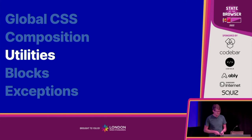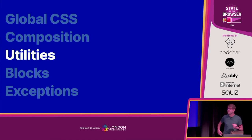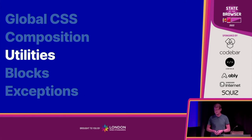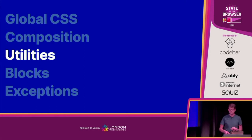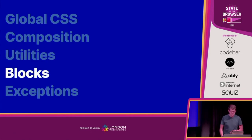Then there are utilities — this is where we start doing the coloring in. This is my favorite bit because I'm a designer. This is where Tailwind steps in too — Tailwind is really good at generating utility classes on the fly. In the context of CUBE CSS, a utility class is something that does one job and one job really well.